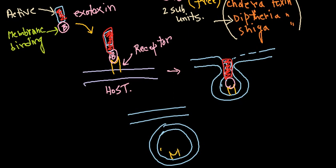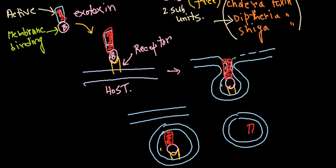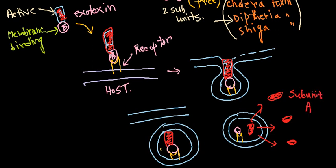Inside the vesicle, due to the change in environment, the A subunit is released from the B subunit. The B subunit remains attached to the receptor while a large number of A subunits are cleaved out and released into the cytoplasm of the host cell.